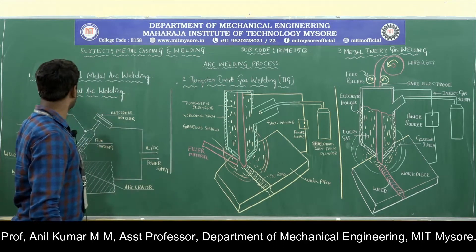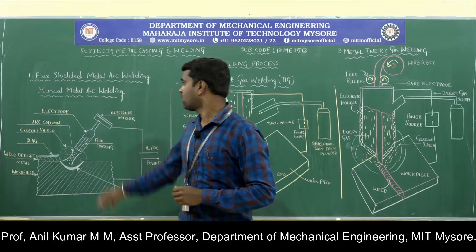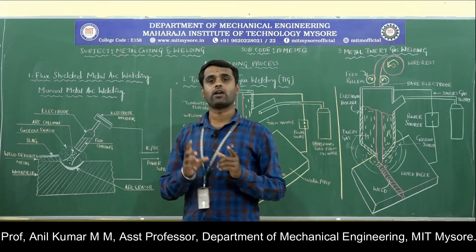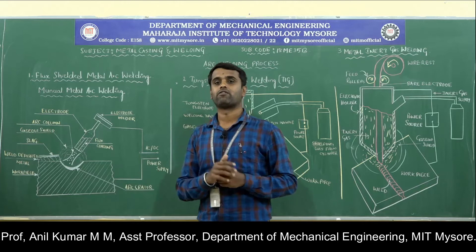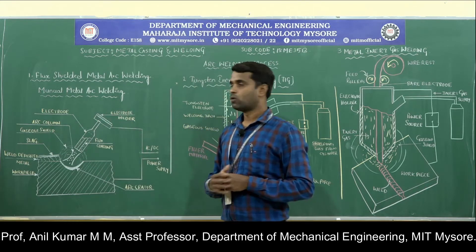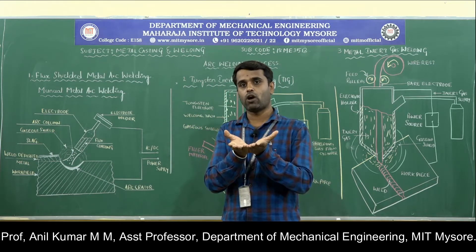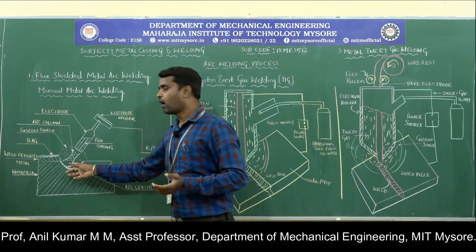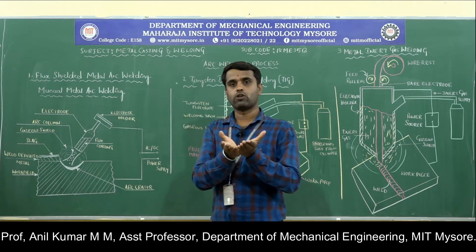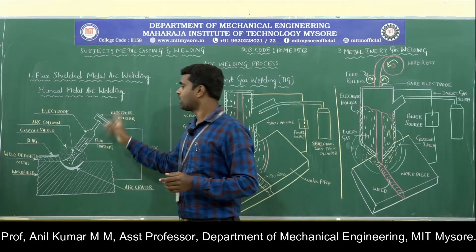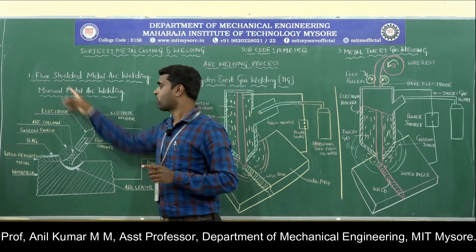The first type of electric arc welding is the Flux Shielded Metal Arc Welding, also called Manual Metal Arc Welding process. Manual metal arc welding means the welding process is carried out manually by a human being. In the flux shielded metal arc welding process, the two workpieces are joined by heat generated by the electric arc, struck between a flux-coated consumable electrode and the workpiece material.